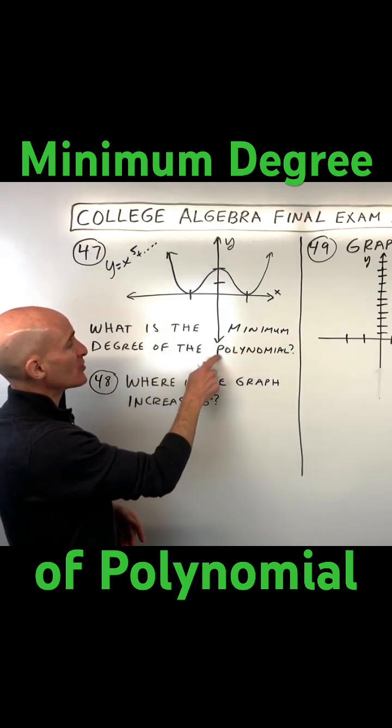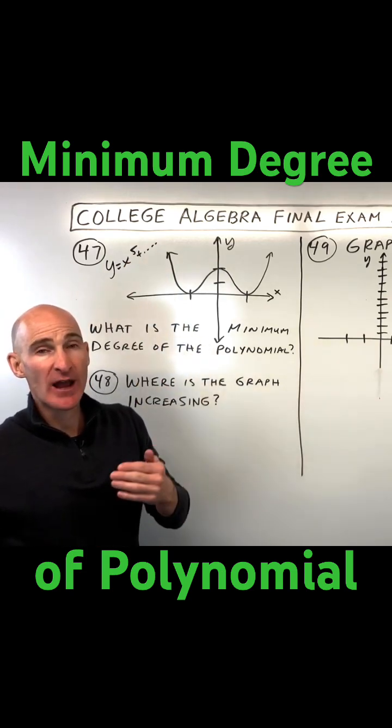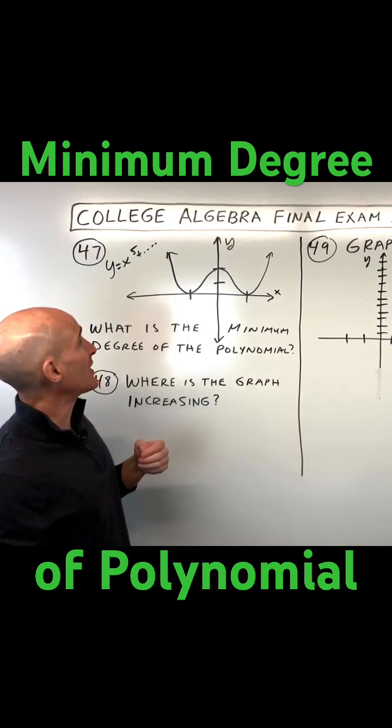Now, this is asking us the minimum degree of the polynomial. When I say that this is x to the fifth, for example, and I subtract one, that's the maximum number of bends. That's four bends in the graph. Of course, it could have less.